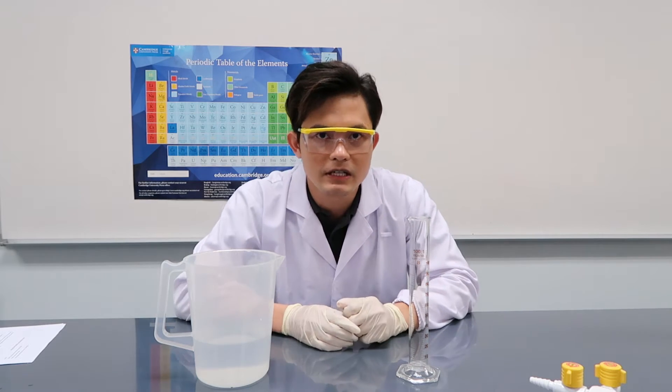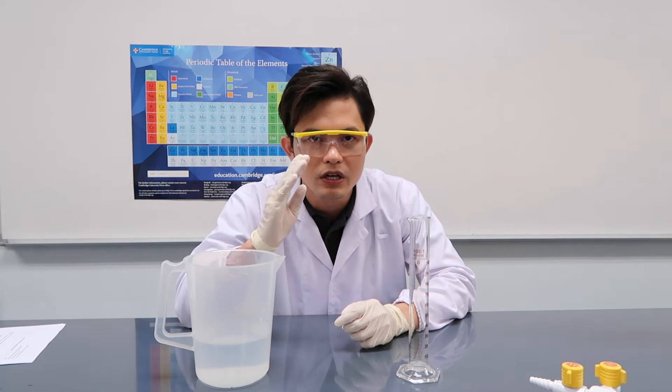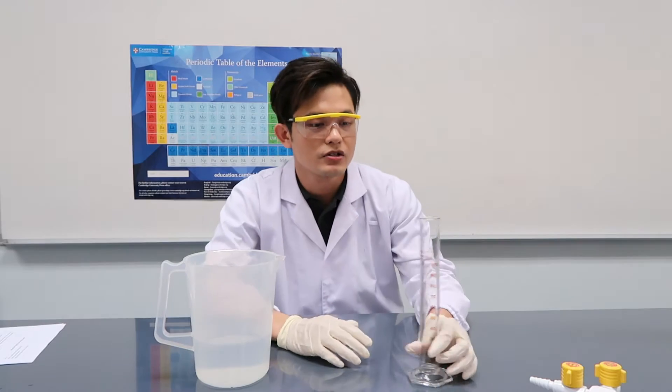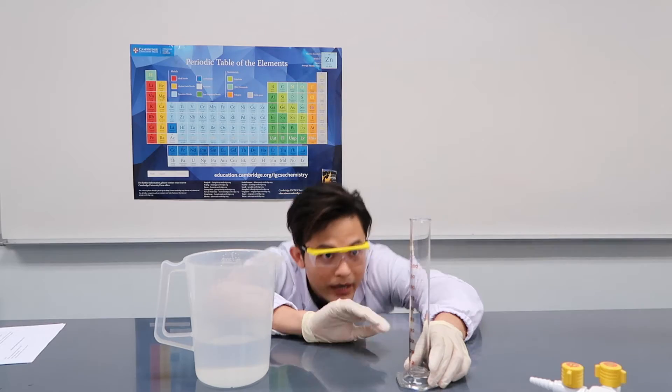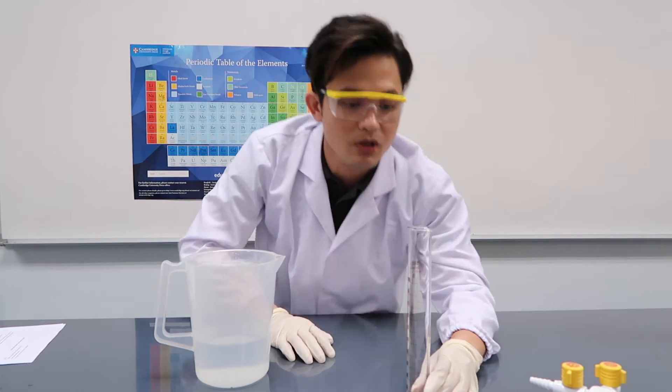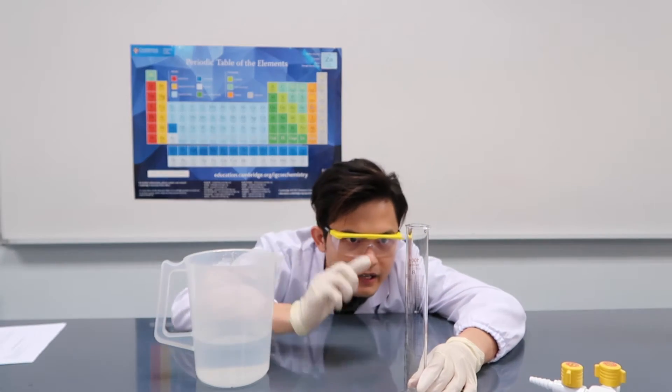In reading the volume of the measuring cylinder, we should always look at eye level. You cannot read the volume like this when it's too high, you cannot read it when it's too low. It's always at eye level.